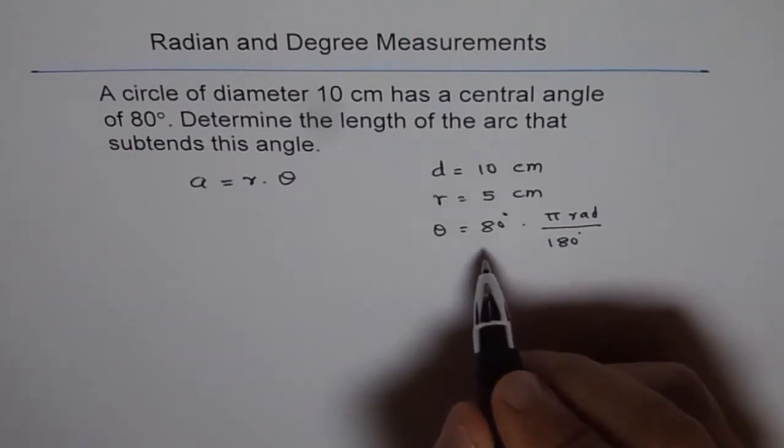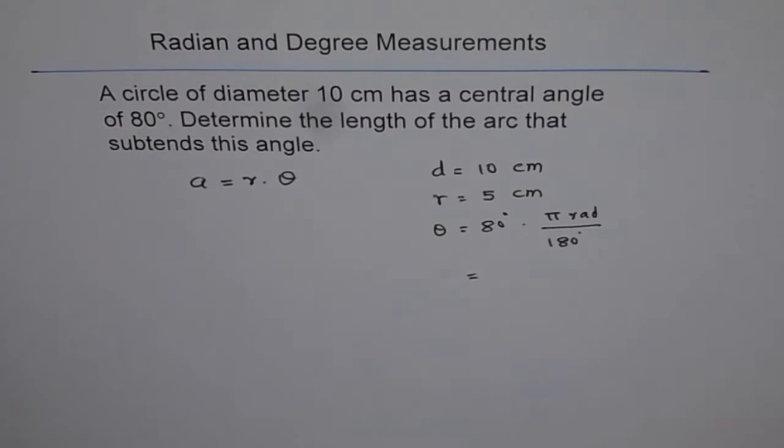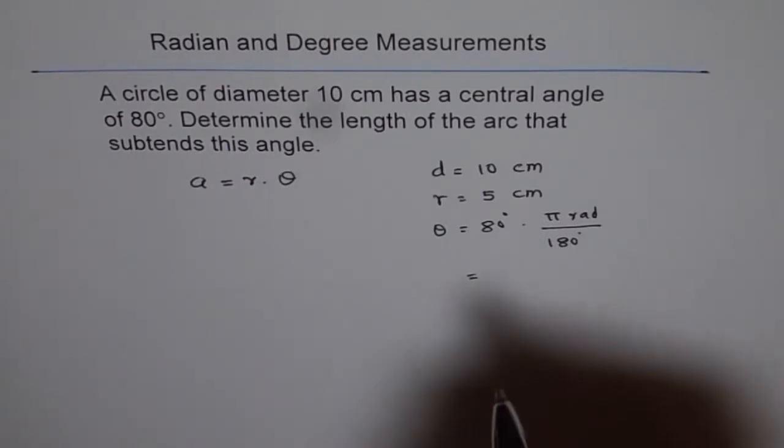So the angle in radians is this, which could be written as... Let me simplify. 80 divided by 180 equals 0.444 times pi, equals 1.396 radians.